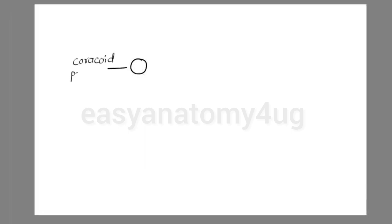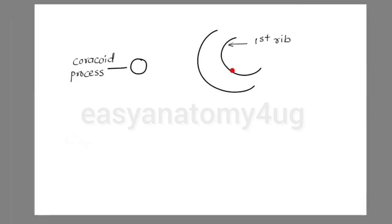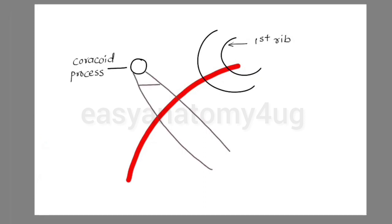The next diagram to show is the axillary artery and its branches. The axillary artery is divided into three parts by the pectoralis minor muscle. Pectoralis minor originates from the 2nd, 3rd, and 4th ribs and inserts on the coracoid process. The axillary artery begins from the outer border of the first rib and ends at the lower border of the teres major muscle, and is a continuation of the subclavian artery. The three parts are: above, behind, and below the pectoralis minor.